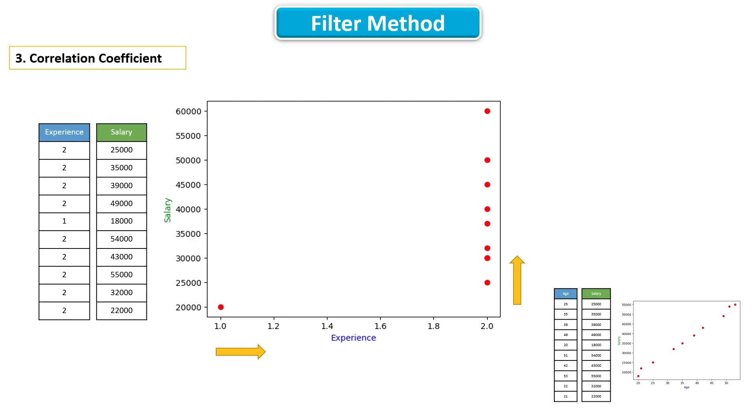How? For example, in this case, we can't tell anything about salary using experience. Because experience is not at all moving, but still salary is moving, which indicates that they are not at all correlated. So simply we can ignore the features which are having less correlation with the target. This is the idea behind correlation coefficient.